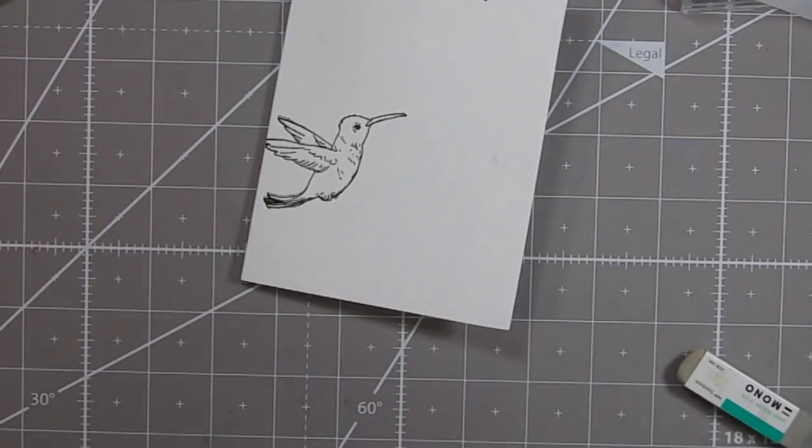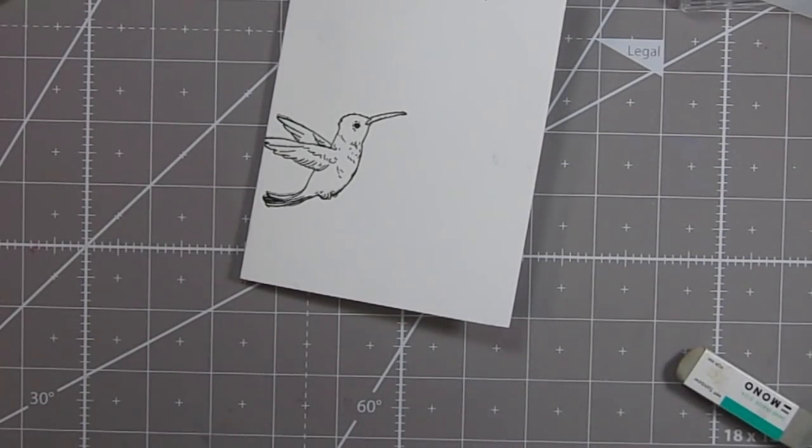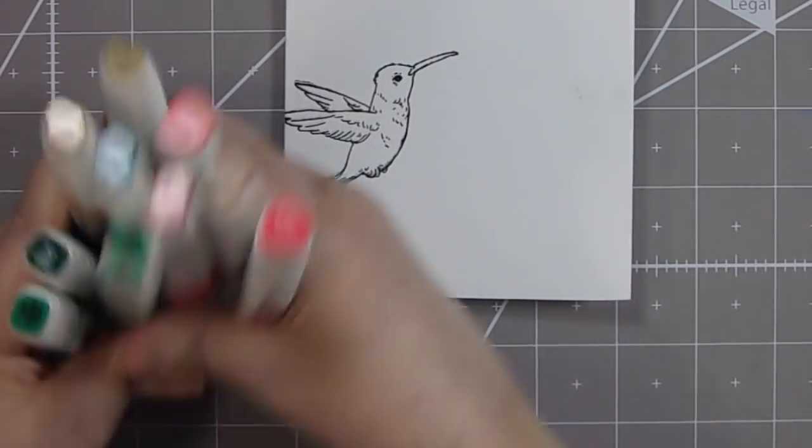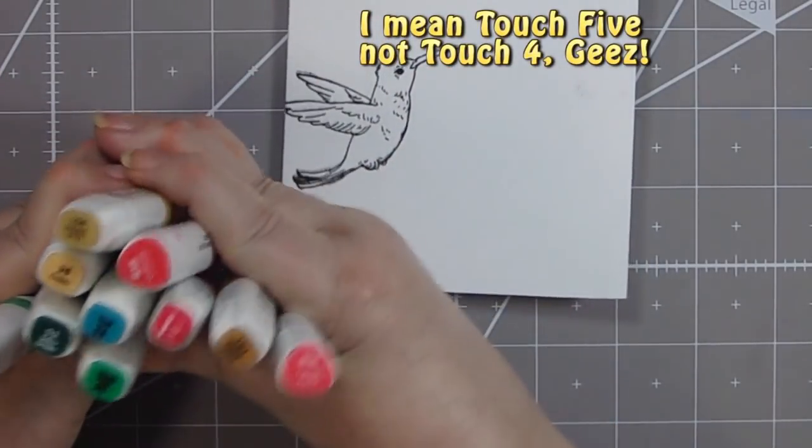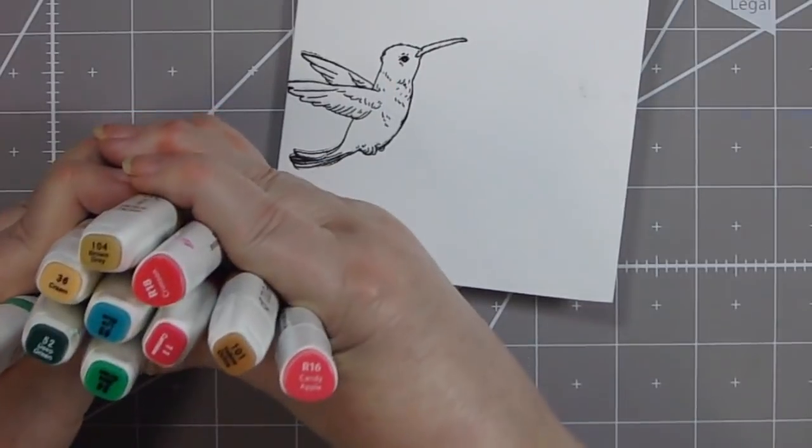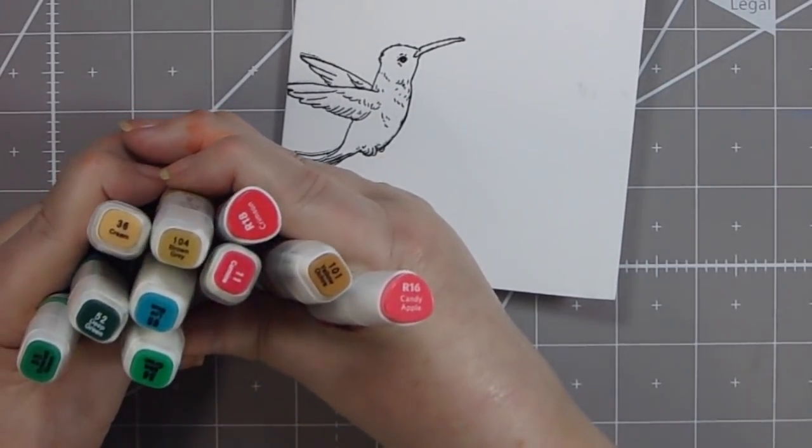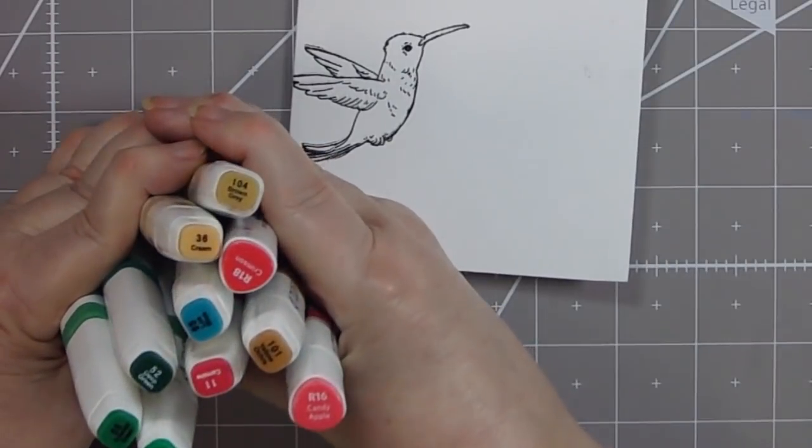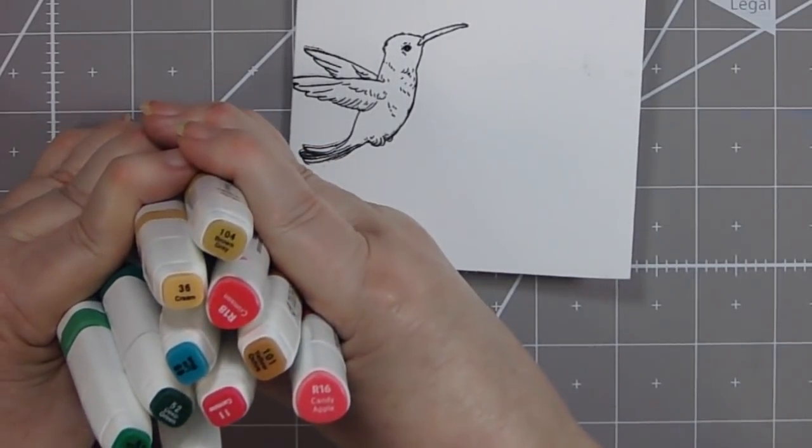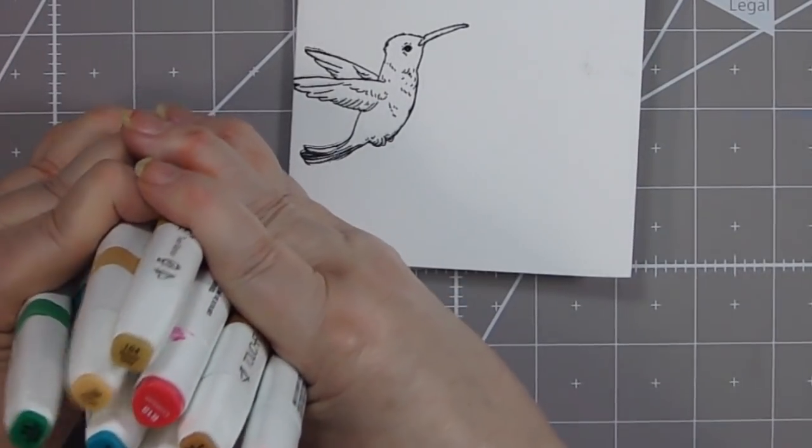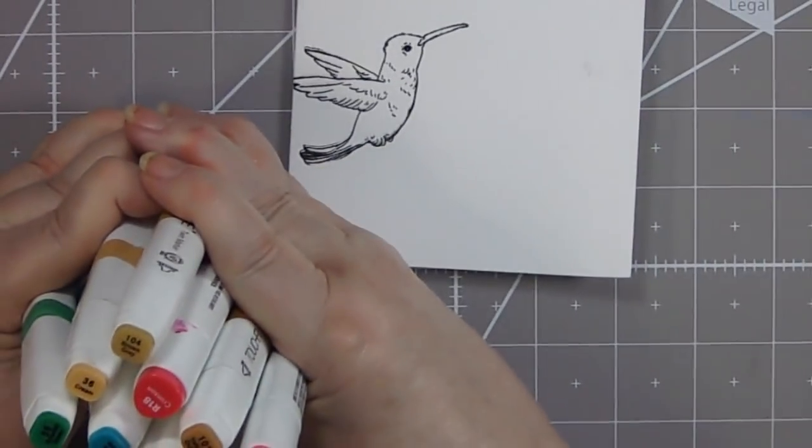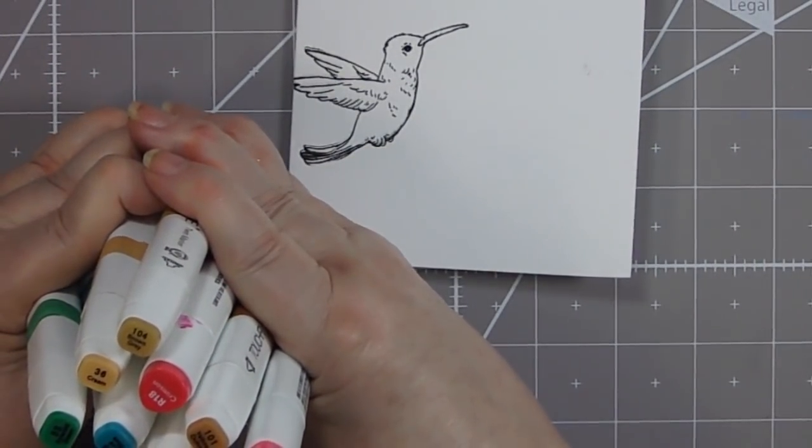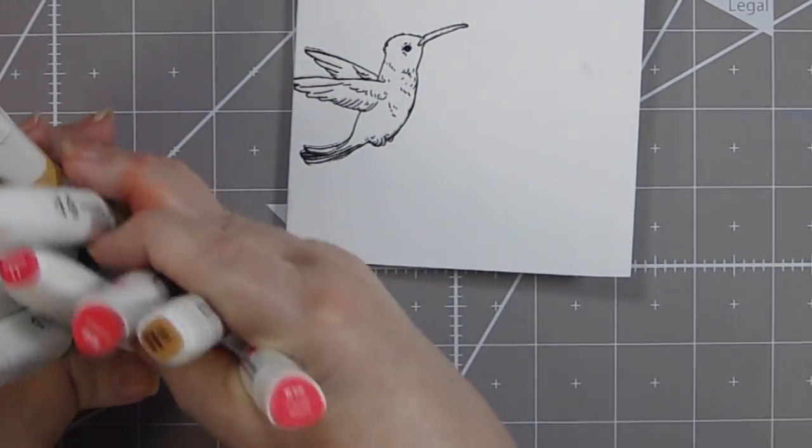I think I'm going to use some alcohol markers on the hummingbird. Here are the alcohol markers I'm going to use, most of them are Touch Four and two are Studio 71. The Studio 71s are R16 and R18 in the red family, then 11 in the red family in my Touch Fives. In the green family this looks like 50 and 55 also 52, then the turquoise color looks like 65, then in the yellowish goldish colors 36, 101, and 104.